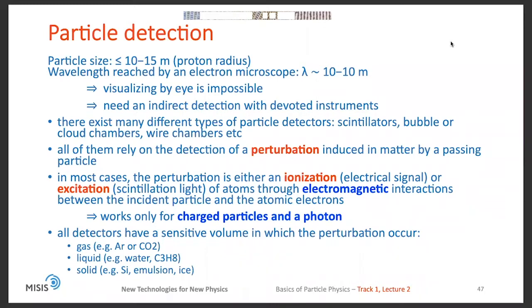As you saw previously, particle size is rather small, smaller than 10 to the minus 15 meters as proton radius. It can be compared to the wavelength which is reached by an electron microscope, about 10 to the minus 10 meters. From here, it becomes clear that visualizing by eye is impossible for particles. Therefore, we need an indirect detection with devoted instruments.